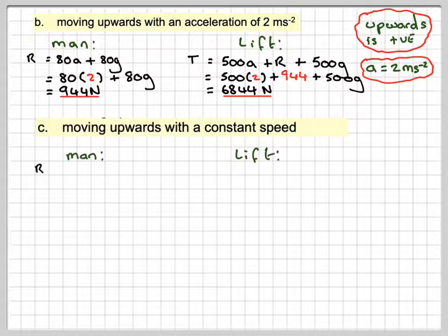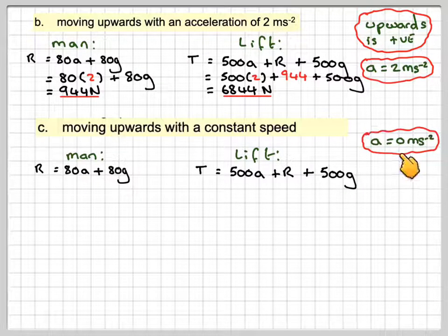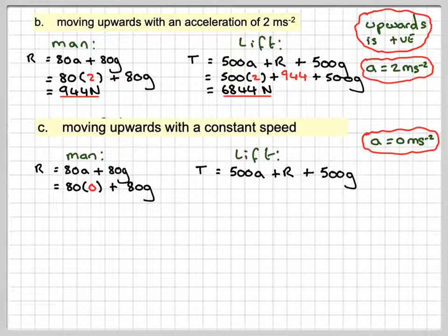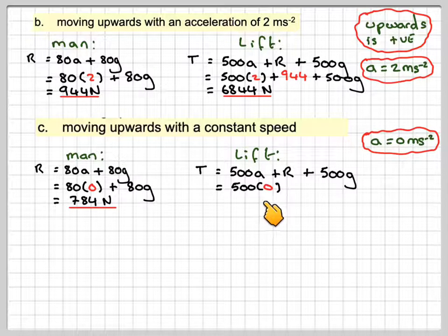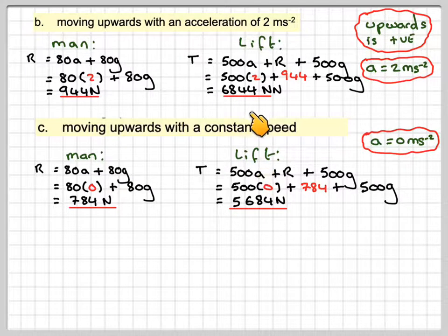Case 2: the lift moves at constant speed, so acceleration equals zero. The equation gives R equals 80 times 0 plus 80g, which is 784 newtons. The tension is T equals 500 times 0 plus 784 plus 500g, giving 5684 newtons. Notice that both the reaction and tension are less than when accelerating upward.